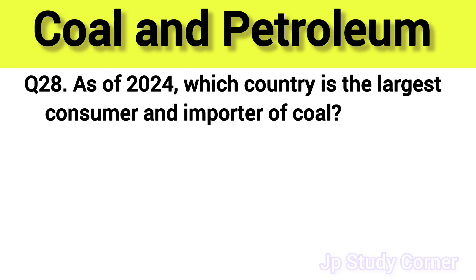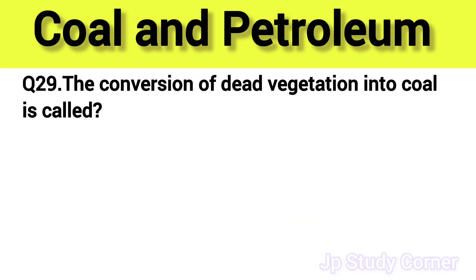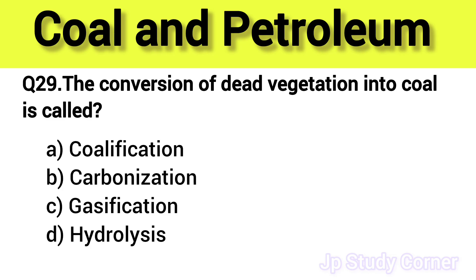Question number twenty-eight: as of 2024, which country is the largest consumer and importer of coal? The right answer is option C — China. Question number twenty-nine: the conversion of dead vegetation into coal is called dash. The right answer is option A — coalification.